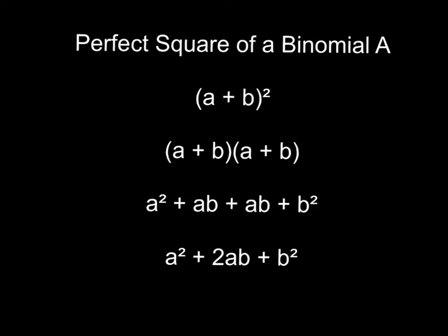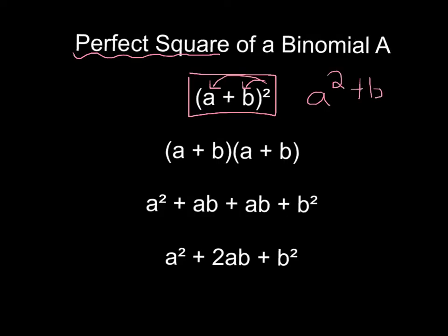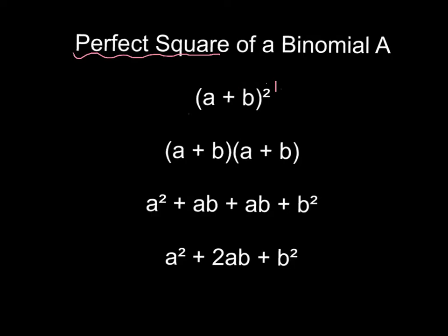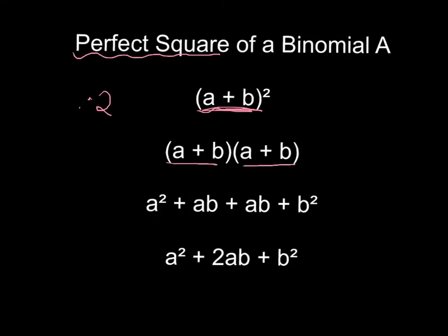Here is the first example of a perfect square binomial. I definitely want you to write these steps down because this is where you're going to really learn the pattern. If you have a plus b squared, a common mistake is when students distribute the exponent to say that equals a squared plus b squared — that is not true. Because really, what does it mean when something is squared? If you have 2 squared, it means 2 times 2. So if you have a plus b squared, it means a plus b times another a plus b. And then if we have two binomials that we're multiplying, we can FOIL.